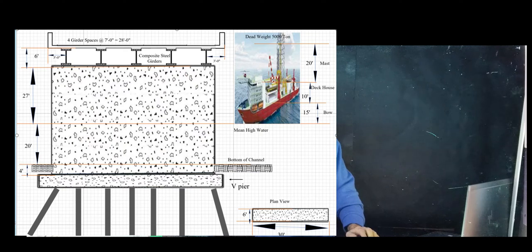The pier cap is about four feet below the bottom of the channel which is on piles. From the mean water all the way to the bottom of the girder is about 27 feet, and the superstructure is about six feet tall.